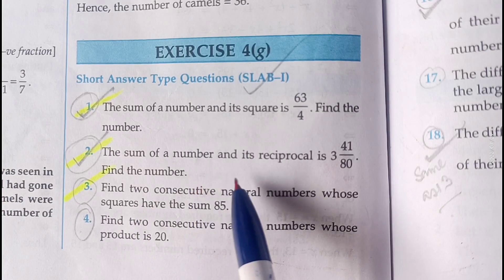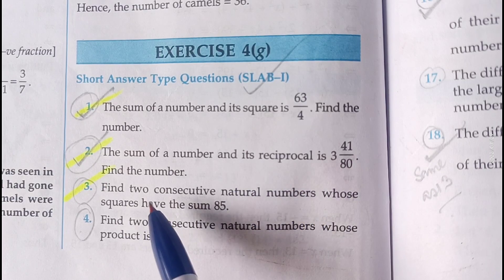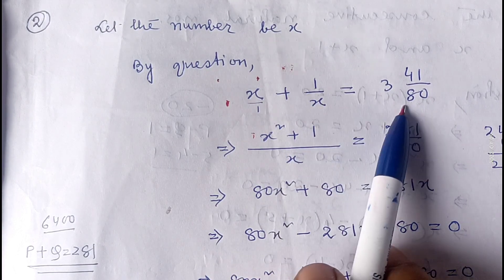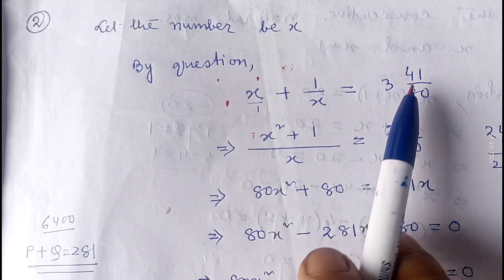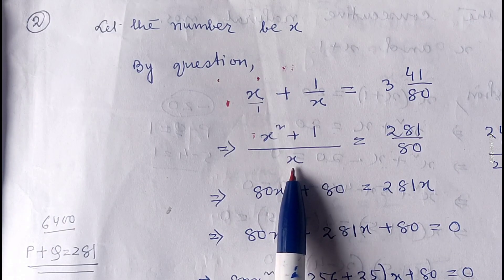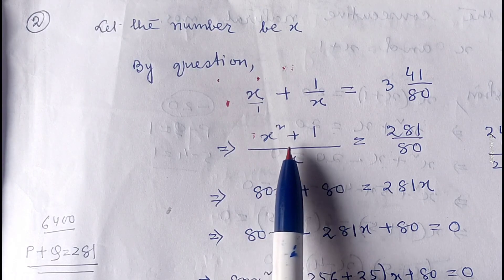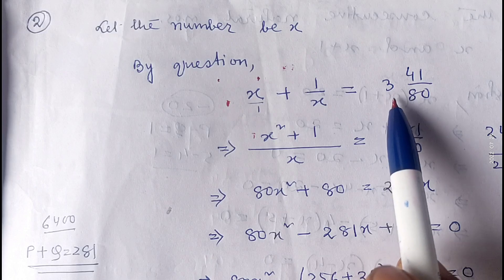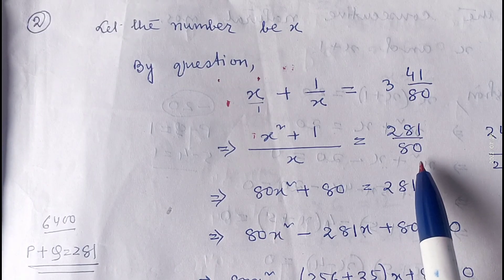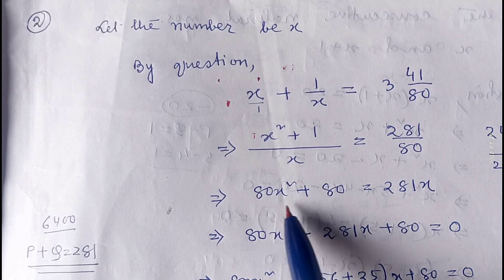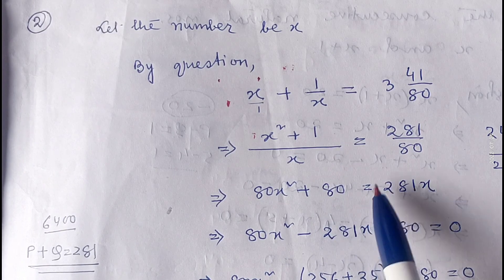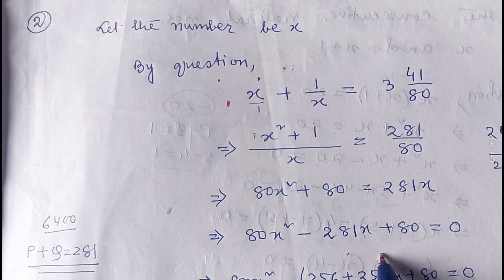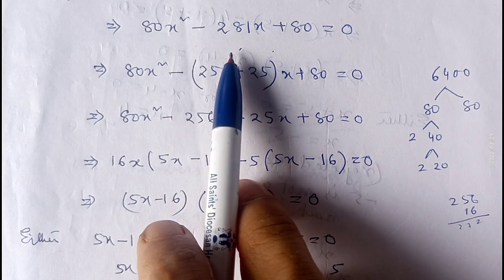Question number 2: the sum of a number and its reciprocal is 341 by 80. Find the number. Let the number be x. As given, x plus 1 by x equals 341 by 80. Taking LCM x, we get x square plus 1 over x equals 341 by 80. Cross multiplying: 80x square plus 80 equals 341x, so 80x square minus 281x plus 80 equals zero.